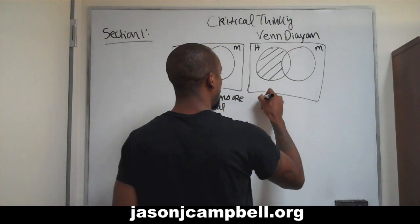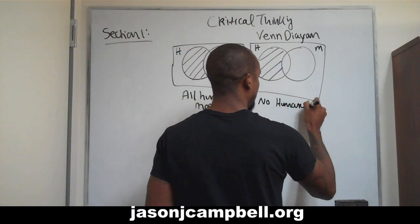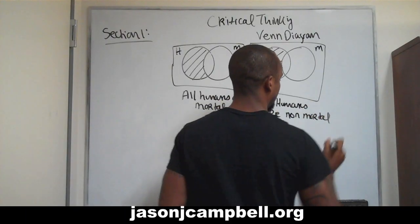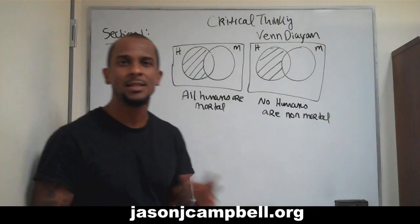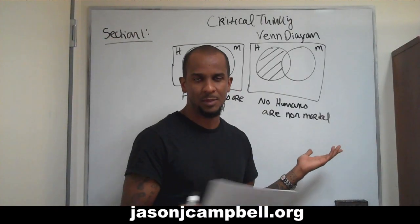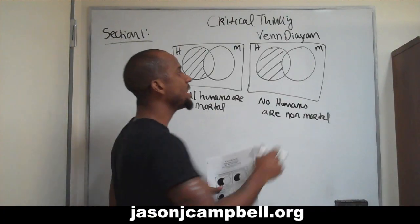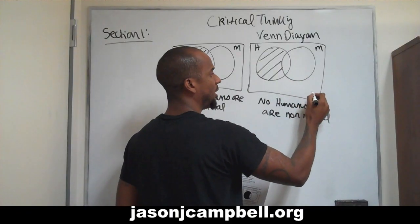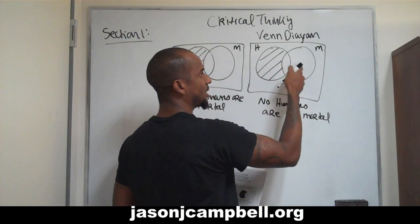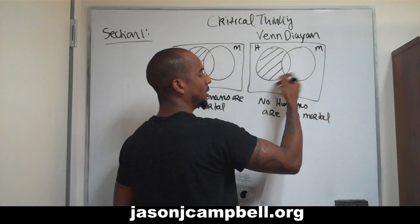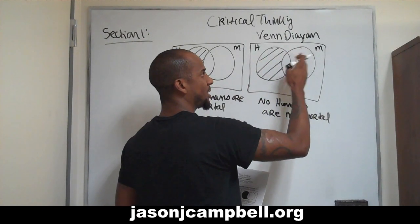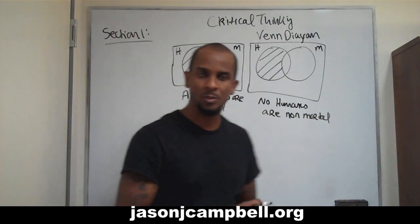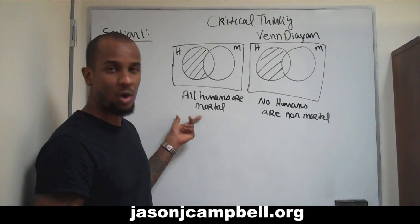So the next one would say 'no humans are non-mortal.' You could put immortal, but immortals are a different concept. Basically it's saying there aren't any human beings located outside of the circle of mortal. There isn't a human being located here — this is completely outside of the circle, but this is empty. So the space that humans occupy is completely contained within mortality, so we can make the claim that no humans are non-mortal — meaning exactly the same as 'all humans are mortal.'